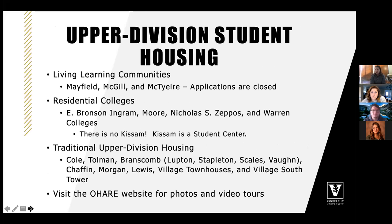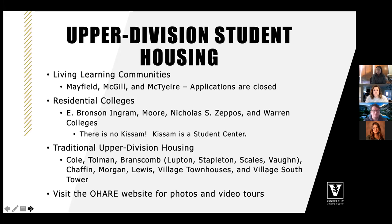Upper division student housing options include living-learning communities — Mayfield, McGill, and McTier — and residential colleges: E. Bronson Ingram, Moore, Zeppos College, and Warren College. As a reminder, CASAM is a student center, not a residence. Traditional upper division housing includes Cole, Tolman, the four Branscombe buildings, Chafin, Morgan, Lewis, and the Village townhouses and South Tower. Due to COVID-19, we cannot do in-person open houses, but photos and video tours are available on our website under the residence hall section.